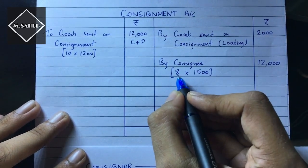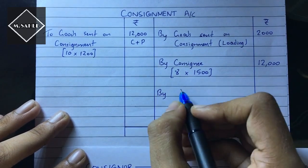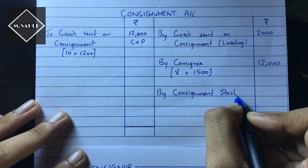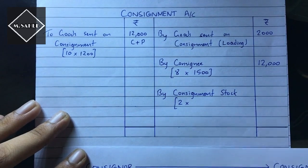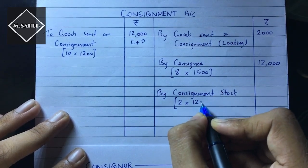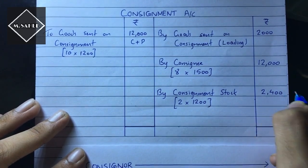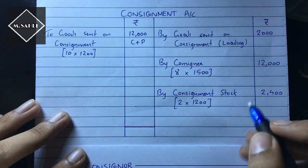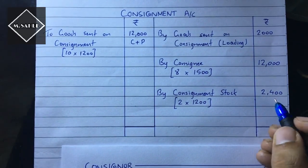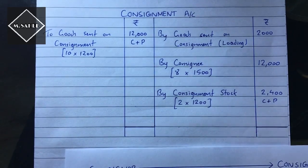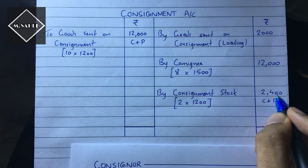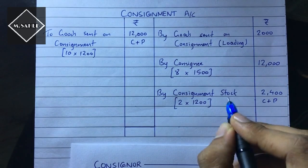Only 8 cycles are sold, so there are 2 cycles left — there is a closing stock. That stock must be valued as 'by consignment stock.' We will value the consignment stock at the invoice price because the goods were sent at invoice price: 2 into 1200 equals 2,400. Before, we used to value the stock at cost price, but in this problem we have valued it at invoice price. So here also there is an element of profit — cost plus profit. The cost is 2 into 1000 = 2,000 and the profit is 2 into 200 = 400, so 2,000 plus 400 = 2,400.